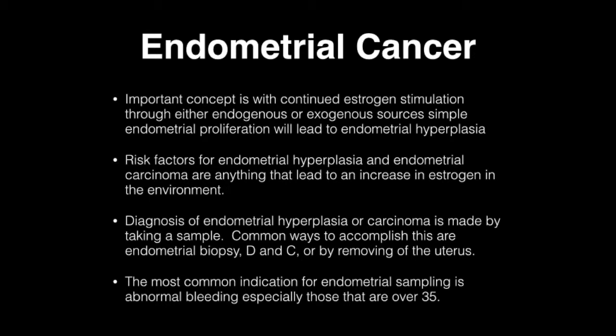Risk factors for endometrial hyperplasia include endometrial carcinoma or anything that increases an estrogen environment. Diagnosis of endometrial hyperplasia or carcinoma is made by taking a sample — common ways include endometrial biopsy, D&C, or removing the uterus. The most common indication for endometrial sampling is abnormal bleeding, especially in those over 35.